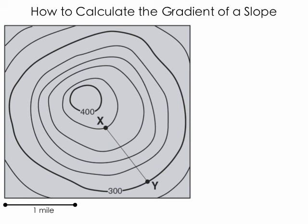Let's take a look at how we can calculate the gradient of a slope on a topographic map. Here you see a simple topographic map of a hill, and I want you to notice that we have a map scale down in the bottom left-hand corner. We have several contour lines, two of which are marked, and we have two points, X and Y.